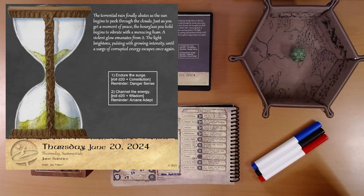The torrential rain finally abates as the sun begins to peek through the clouds. Just as you get a moment of peace, the hourglass you hold begins to vibrate with a menacing hum. A violent glow emanates from it. The light brightens, pulsing with growing intensity, until a surge of corrupted energy escapes once again.